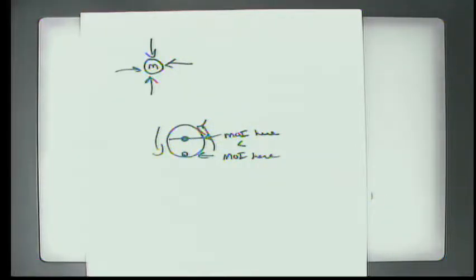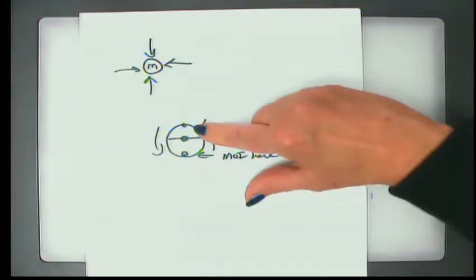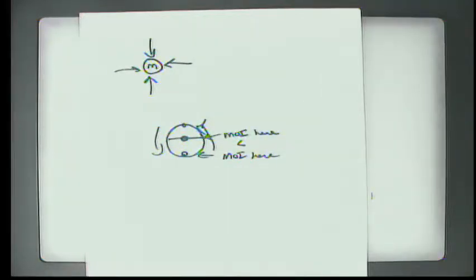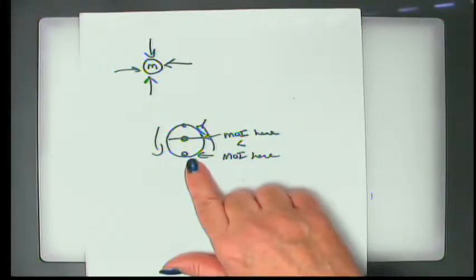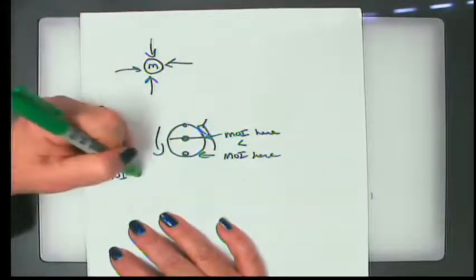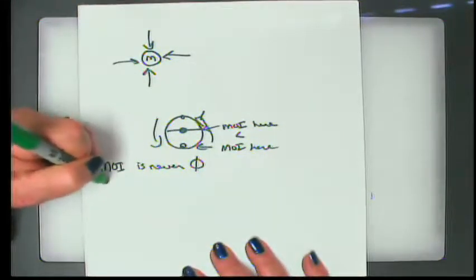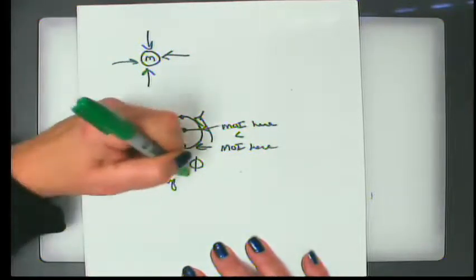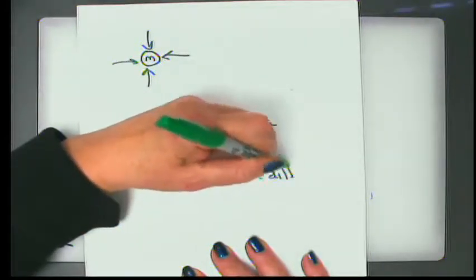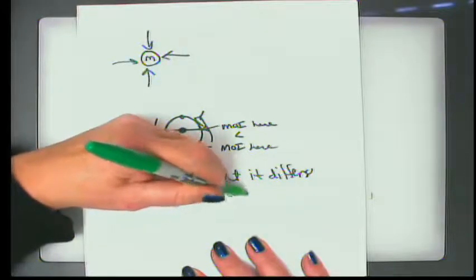Because of symmetry, the moment of inertia about a top point and a bottom point of a symmetric object will be the same — up or down doesn't matter. Remember, Q the first moment could be positive or negative depending on whether the area was above or below. With the moment of inertia, it's always positive no matter what. The moment of inertia of any real object is never zero. Q equals zero about the centroid, but the moment of inertia is never zero — it's always positive — but it differs in value depending on the axis of rotation.